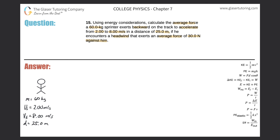We should be thinking about this formula on the right-hand side. The total work done on the system equals the average net external force on that system, multiplied by the distance that force is exerted over, then multiplied by the cosine of the angle between the force vector and the displacement vector. In order to calculate F, we need to know three things: the angle, the distance, and the work.